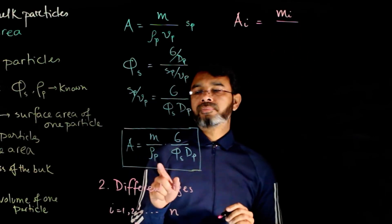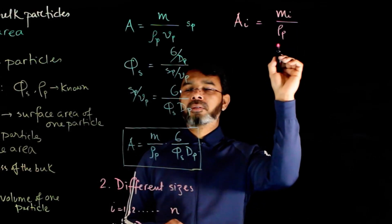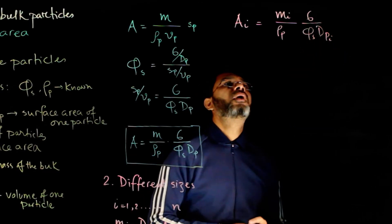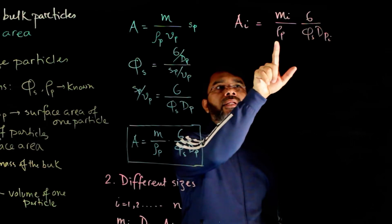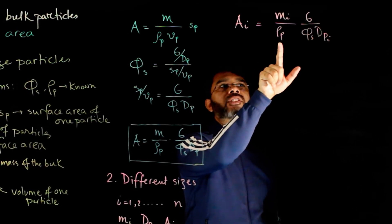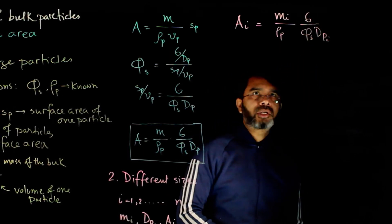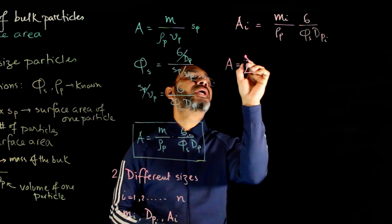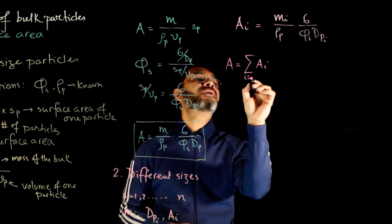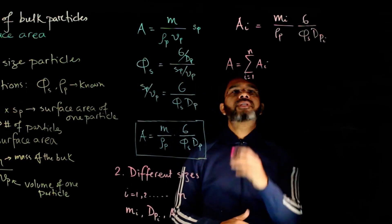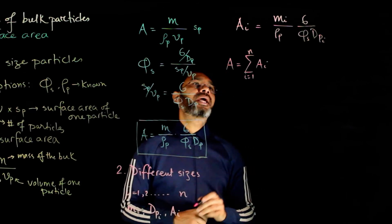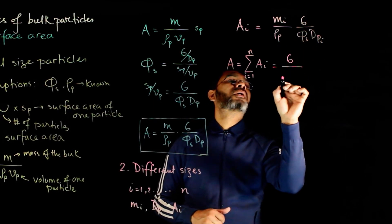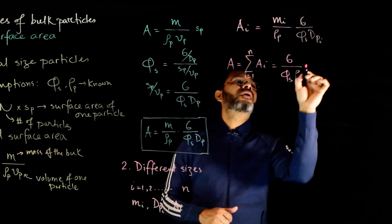You can write Ai equals mi over rho_p times 6 over (phi_s × dpi). Remember that we are assuming the same material but of different sizes, so rho_p is constant and phi_s the sphericity is also constant. Ai is the total surface area of the ith size group, so the total surface area equals the sum of the individual surface areas belonging to each group. In this equation, 6, rho_p, and phi_s are all constant.